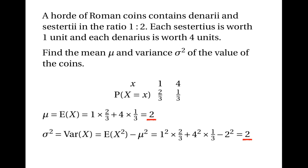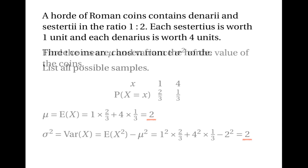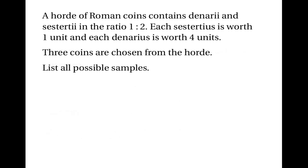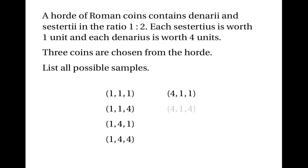Now let's find the sampling distributions of some statistics. Suppose that three coins are chosen from the hoard — we'll need to work out all the possible samples. The possibilities, written systematically, are: (1,1,1), (1,1,4), (1,4,1), (1,4,4), (4,1,1), (4,1,4), (4,4,1), and (4,4,4).